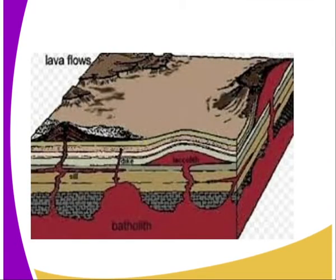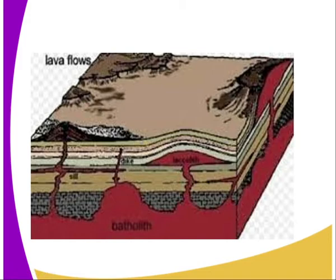Looking at the flow of the magma, the material that reaches the surface results in the formation of mountains and plateaus — features of the earth's surface. That is what we refer to as extrusive volcanicity, when the magma becomes lava.